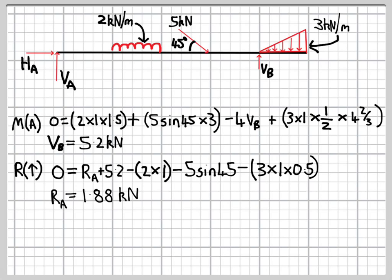We've got the vertical component of the point load again, that's also acting down. And then the final term in the equation, the 3 times 1 times 1 half, is the triangular load at the end of the beam. Again, if we work that through, we end up with an answer for RA, and it's 1.88 kilonewtons.